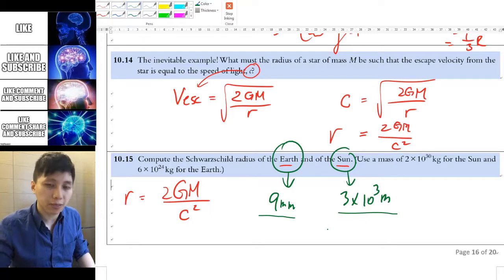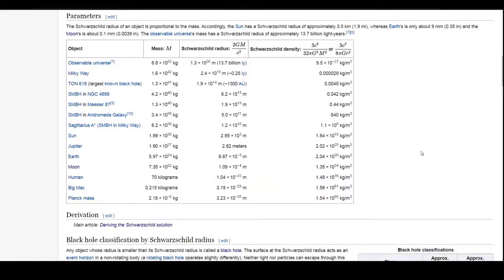If you're interested, you can go and check out the list on Wikipedia. And here is a list showing you the Schwarzschild radius for each of these objects, including human or even a Big Mac. So for human, you need to reach 10 to the power of negative 25 meter in order to become a black hole. So yeah, not really possible to be honest.